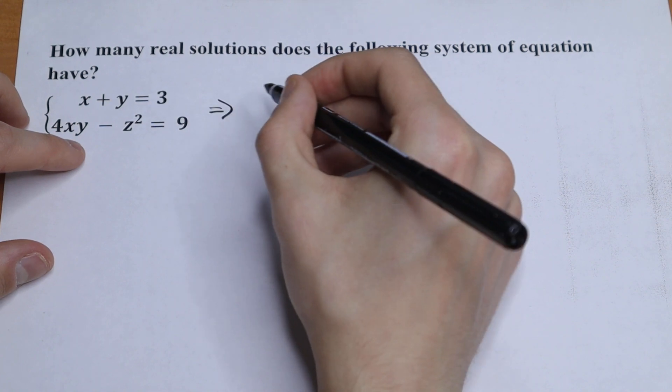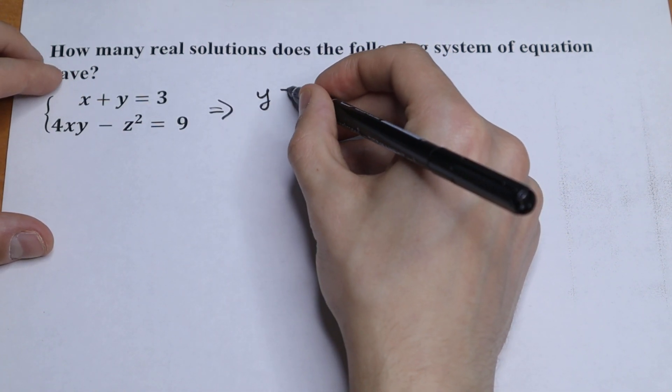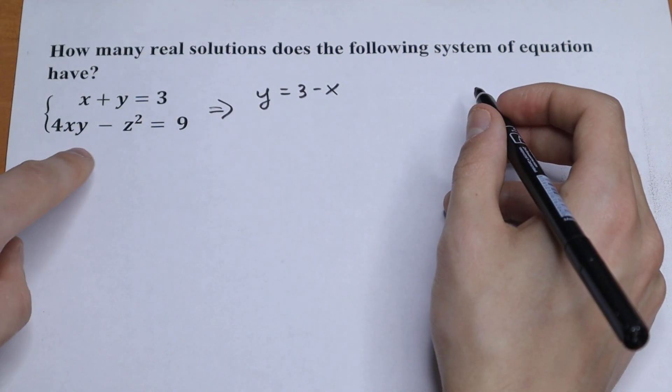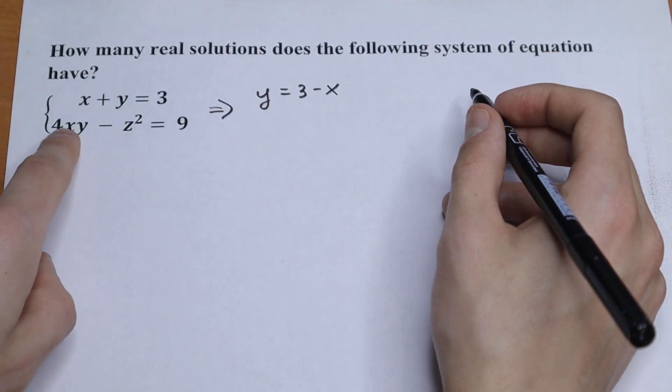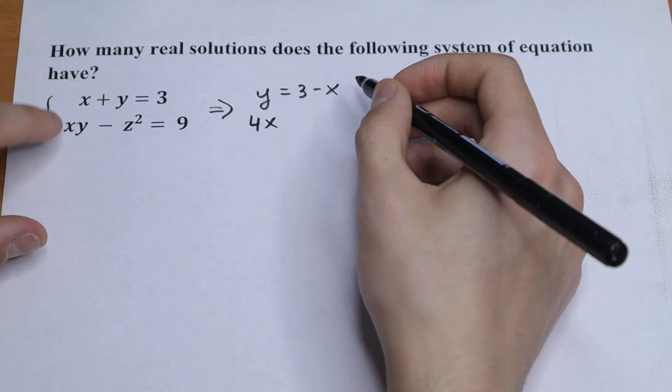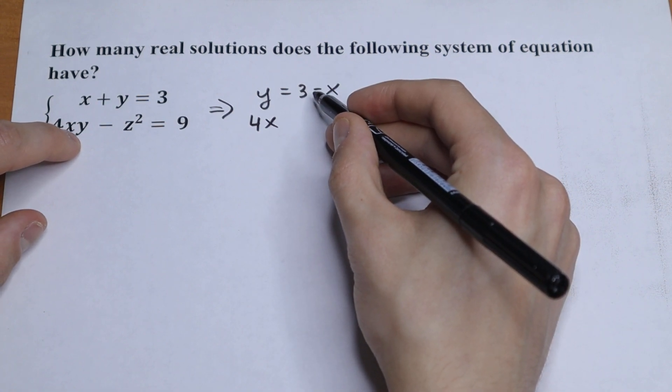From first equation we can find our y. So y equal to 3 minus x. And let's plug in this y right here, but instead of y we can write 3 minus x. So we will have 4x and right here we plug in this y, 3 minus x.